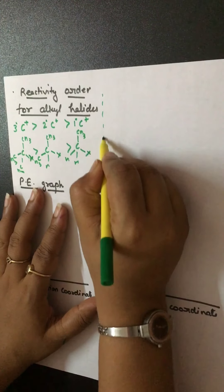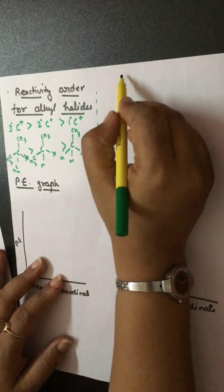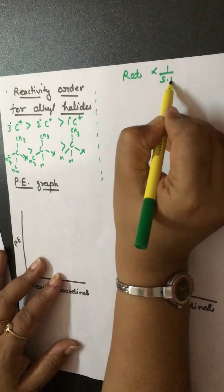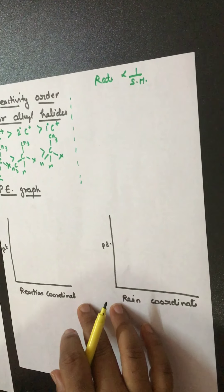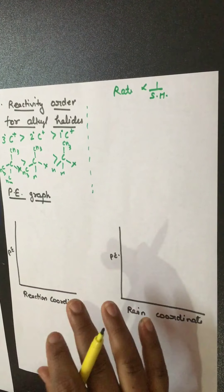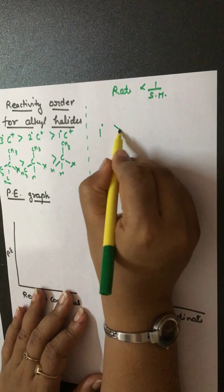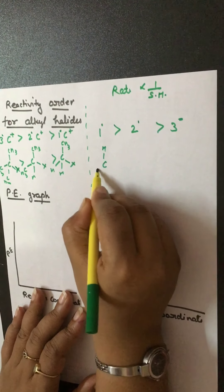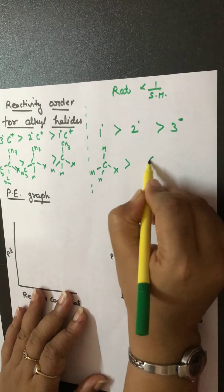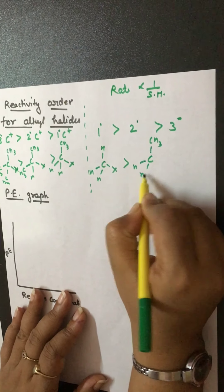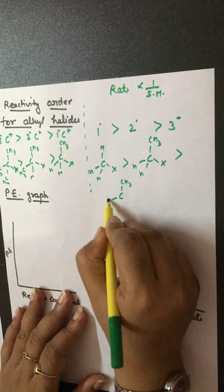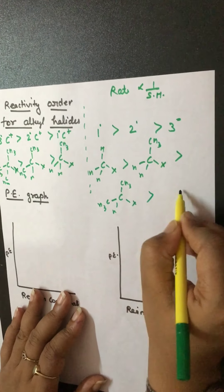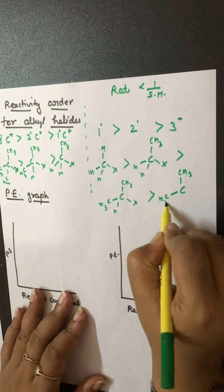For SN2, attack is from the back side, and in this case the rate is inversely proportional to steric hindrance. This means the more bulky groups present, the lesser the nucleophile attack. So for SN2, the reactivity order is: methyl halide > 1° halide > 2° halide > 3° halide. We have not considered aromaticity here; this is for simple alkyl halides only. If an aromatic compound is given, we will also consider aromaticity and check whether it is resonance-stabilized or not.